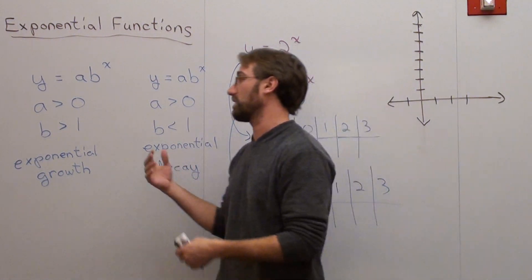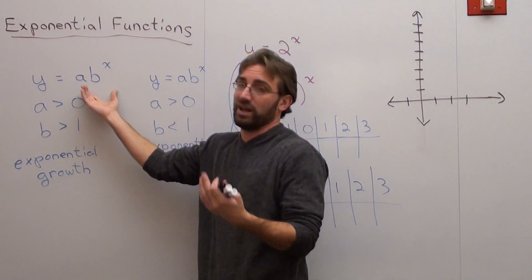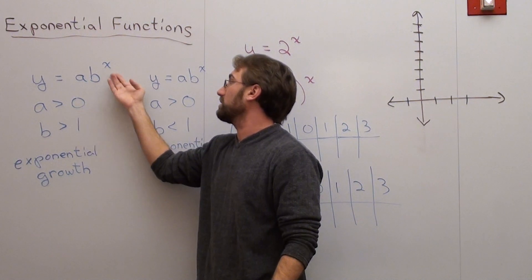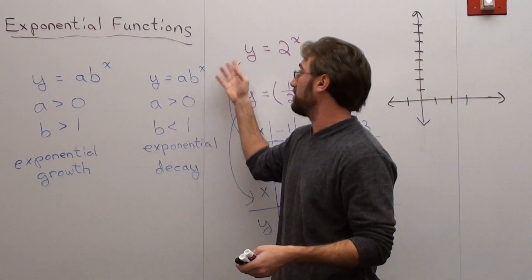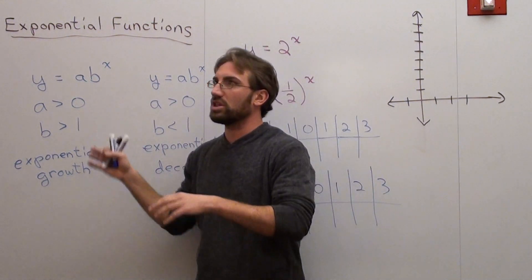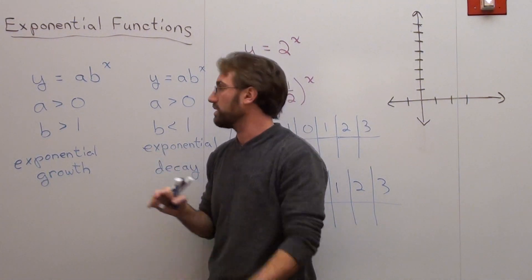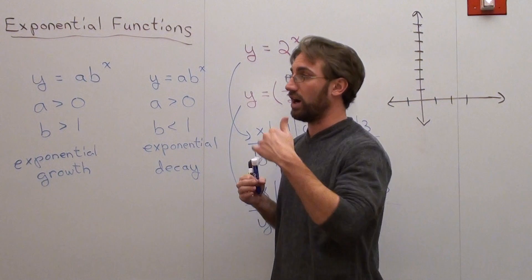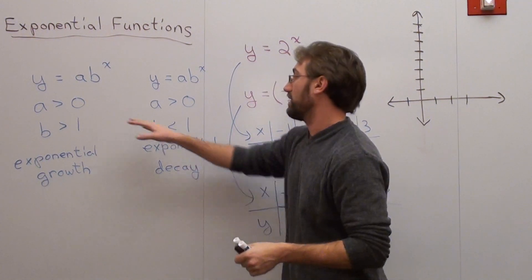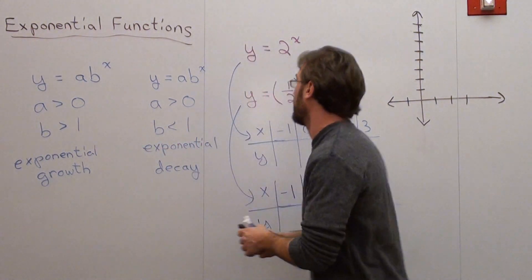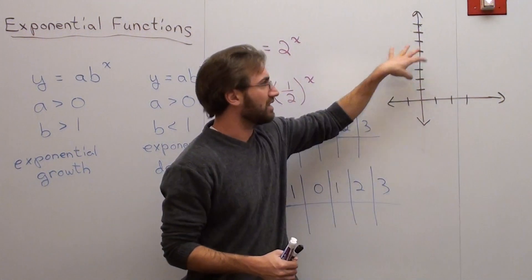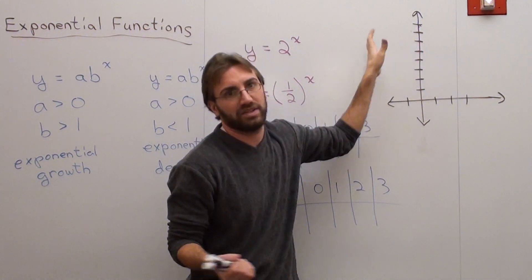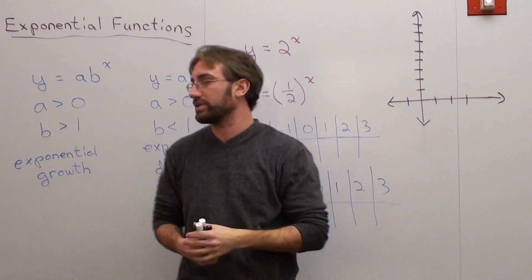Now, the form of an exponential function can come in this manner. Y equals AB to the x power. A is just the number in front of the base, but it always has to be greater than 0 for it to be an exponential function, either exponential growth or decay. That's all you really have to memorize here. It can't be negative, because if it's negative, it's not going to be on this side of the x-axis. It's got to be on the top side of the x-axis.